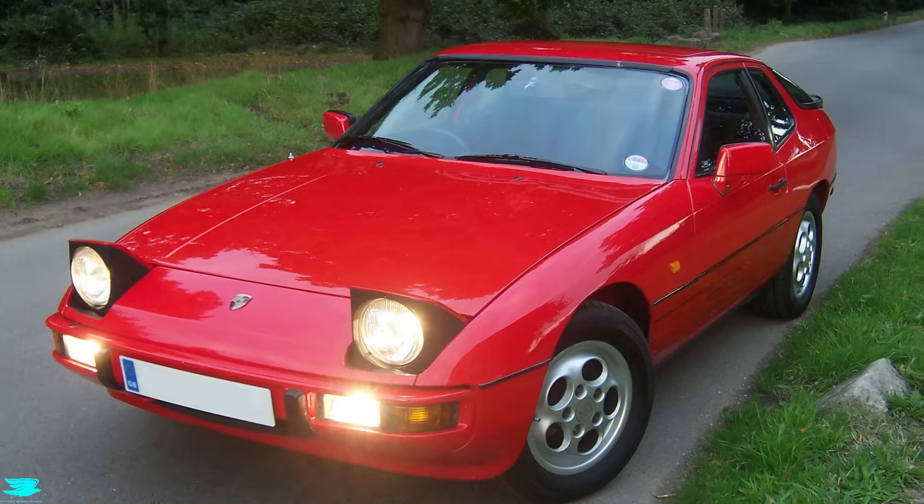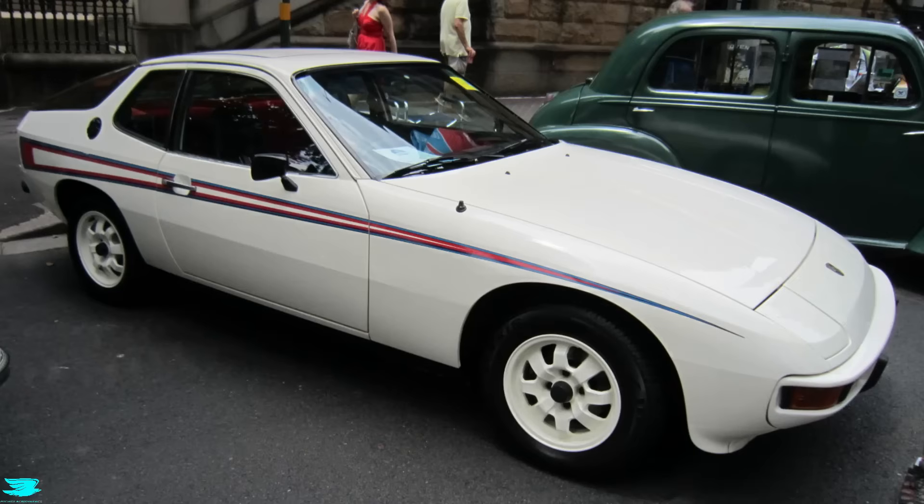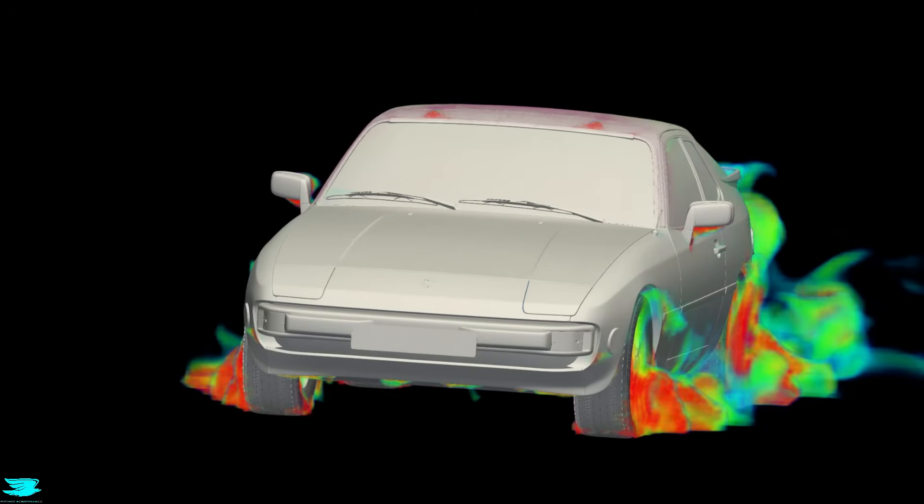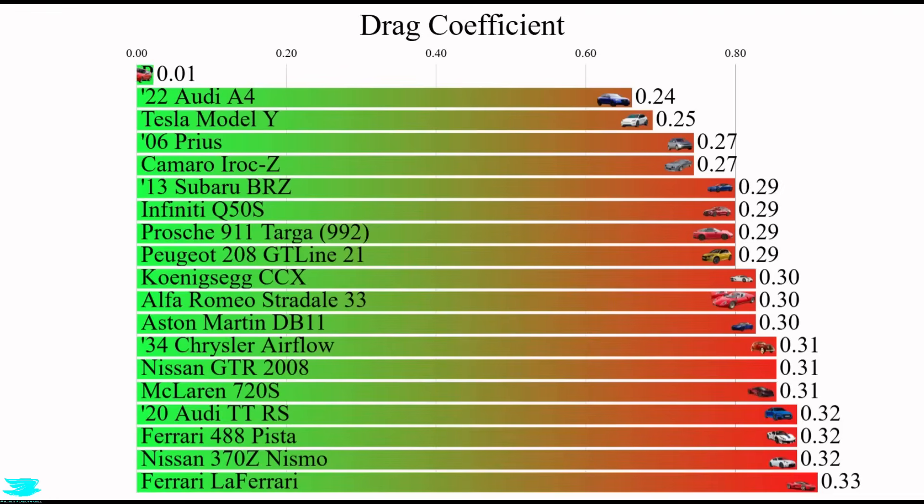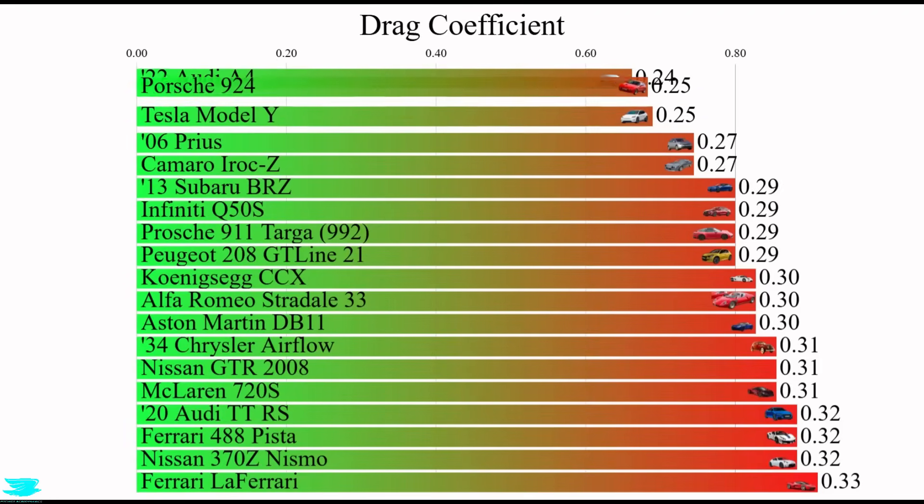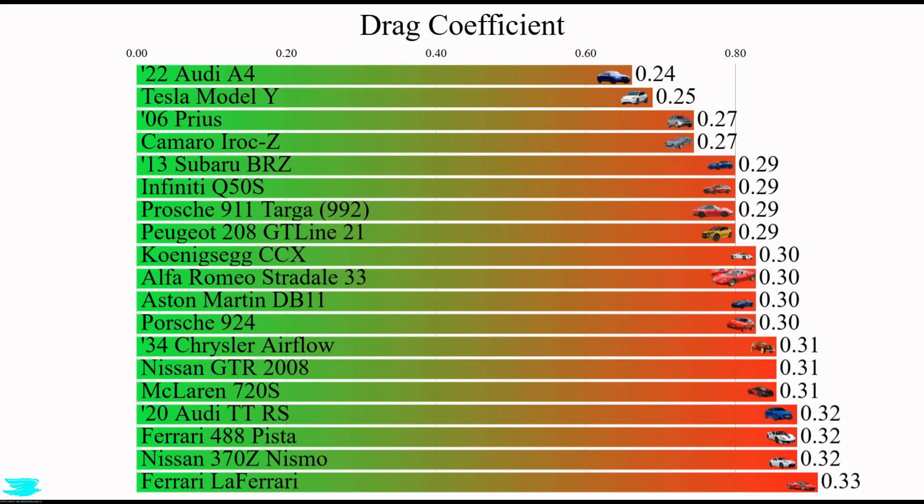The Porsche 924 is nearly 50 years old, but it's still as aerodynamic as cars these days. We simulated it at 90mph and its drag coefficient was just 0.30, back in the 70s. That's better than a lot of cars these days and about as good as a new 911 today.